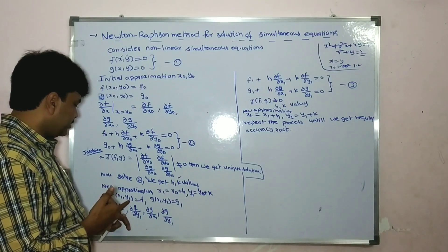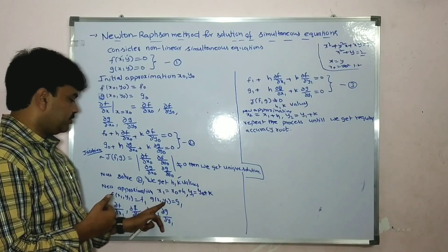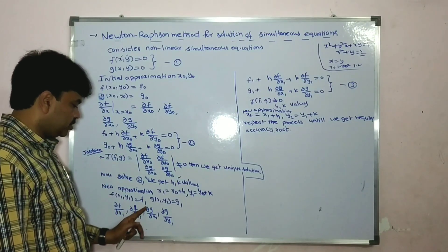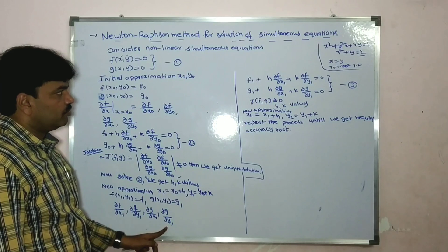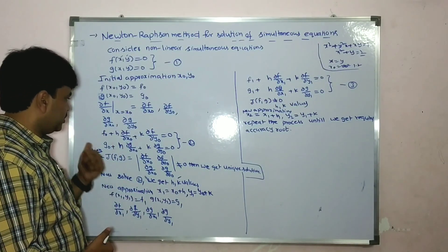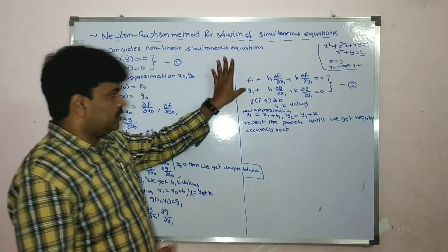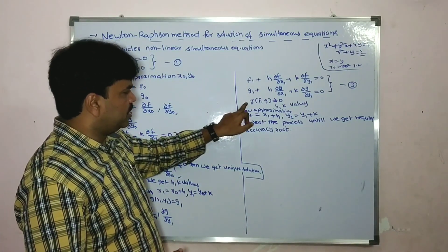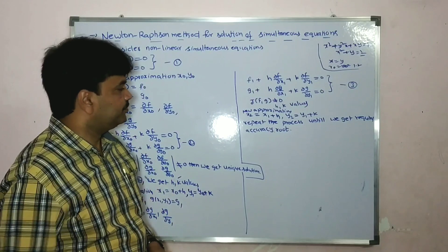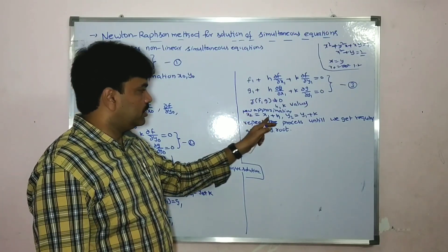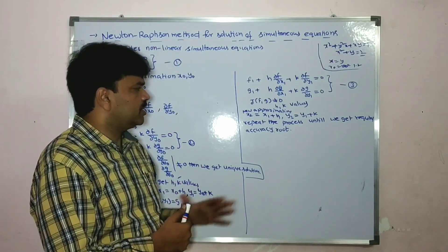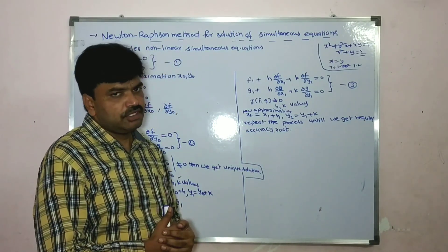We get a new approximation — that means we started with x0 and y0 as the approximate solution of the given equations. At this stage we get a value very near to the root. x1 is x0 plus h and y1 is y0 plus k. Then f of x1 comma y1 is f1, g of x1 comma y1 is g1. Similarly, find ∂f/∂x₁, ∂f/∂y₁, ∂g/∂x₁, ∂g/∂y₁ as in the previous case. Again write the equations with subscript 1 in place of 0, check J not equal to zero, get h and k. New approximation: x2 equal to x1 plus h, y2 equal to y1 plus k. Repeat until required accuracy.